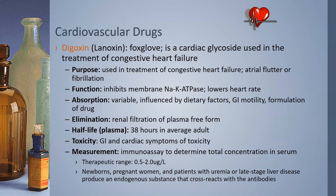Elimination occurs via renal filtration of the plasma free form. This means that if your patient is in renal failure, whether acute or chronic, that could affect how the patient is clearing the drug and their plasma levels. The half-life in plasma in a normal adult is going to be 38 hours. Toxicity of digoxin will show up as GI and cardiac symptoms, and measurement is via immunoassay to determine the total concentration in serum — both bound and free.